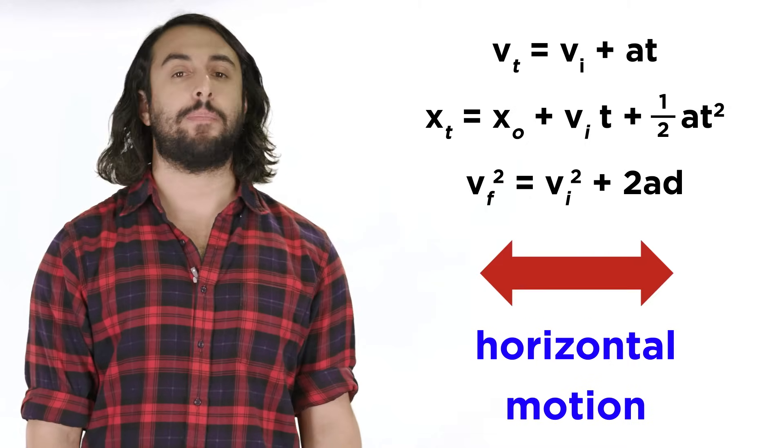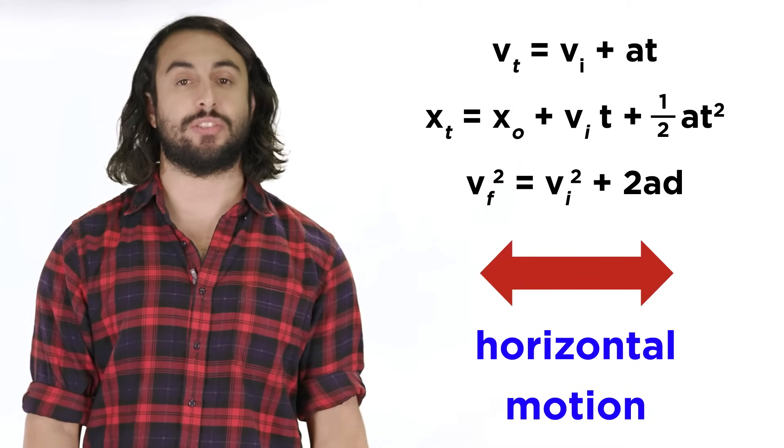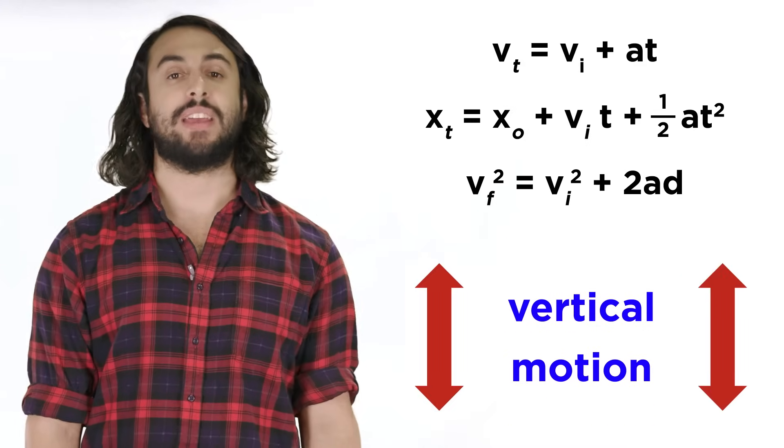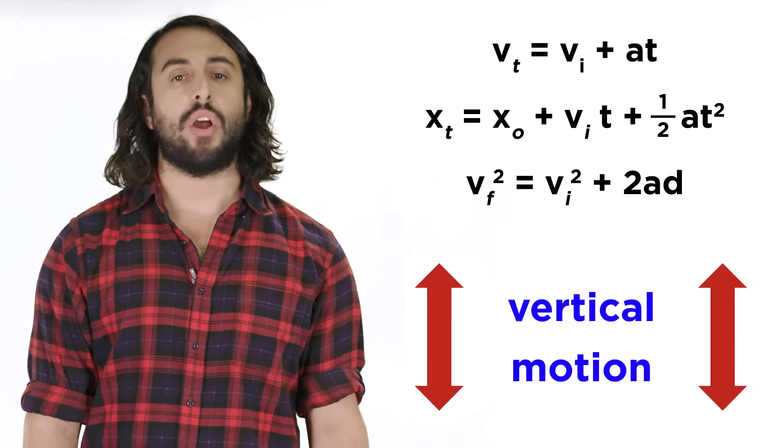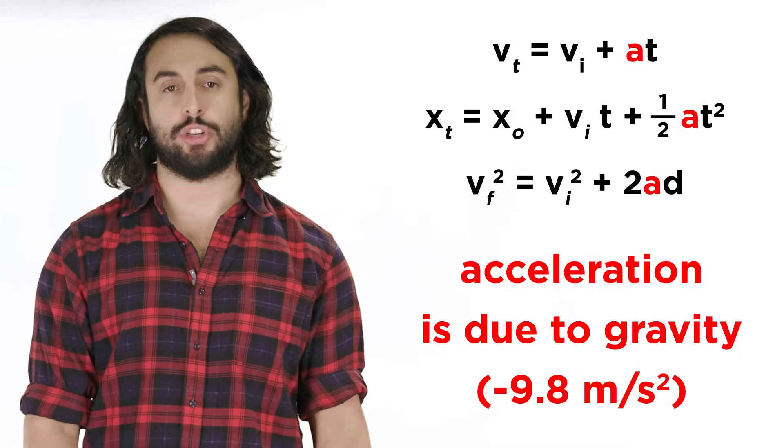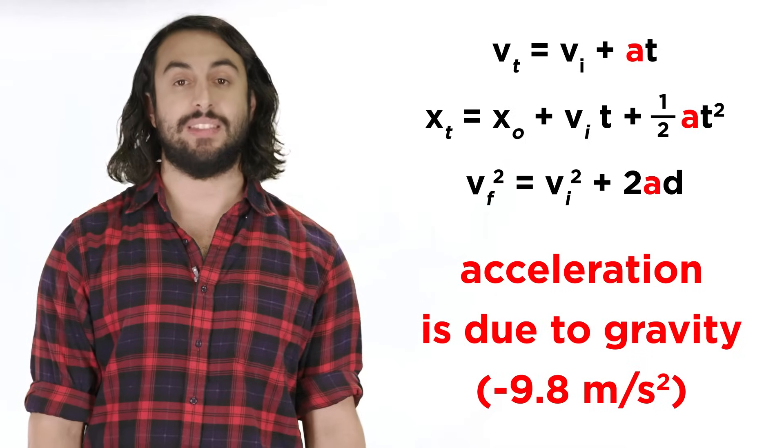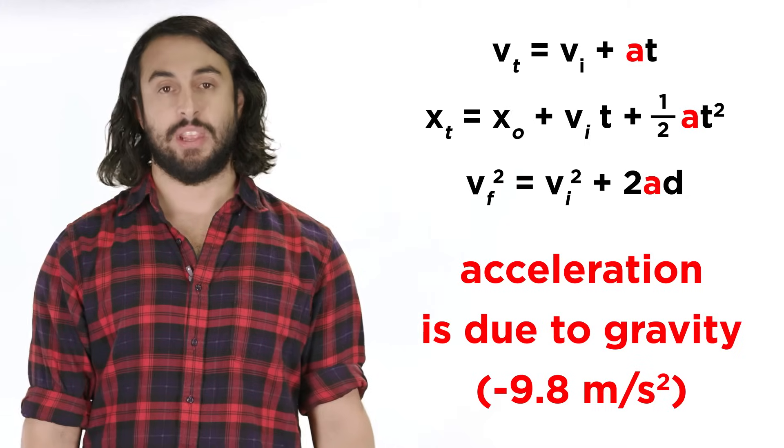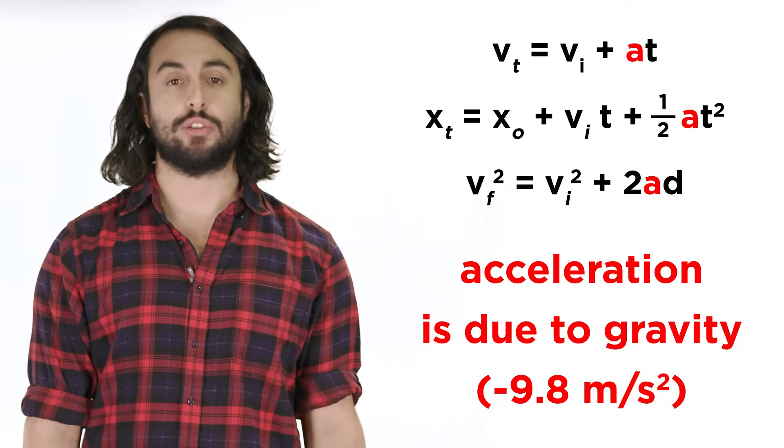We also saw how we can apply these to simple horizontal motion, and things will be essentially the same when looking at vertical motion. The only difference is that when examining strictly vertical motion, the acceleration will be the acceleration due to earth's gravity, which is a constant, negative 9.8 meters per second squared.